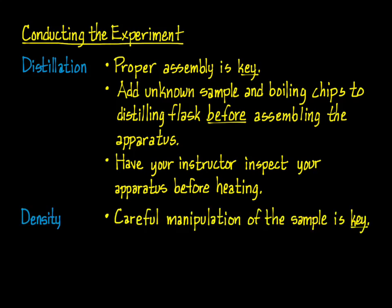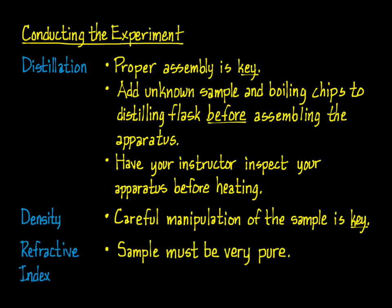For measuring density, careful manipulation is the key. The unknown compounds are quite volatile, meaning they evaporate rapidly when open to the atmosphere. So you need to take care to keep containers closed while you make your mass measurements, and you should repeat the measurement to ensure that you are getting an accurate number. The refractometer is very easy to use — simply place a few drops of the sample on a plate, close the lid, and press a button. But even very small amounts of impurities can change the refractive index of a sample, so make sure it's free of contamination as you transfer the sample into the instrument. Don't forget to record the temperature in case it differs from the temperature listed in the CRC Handbook.